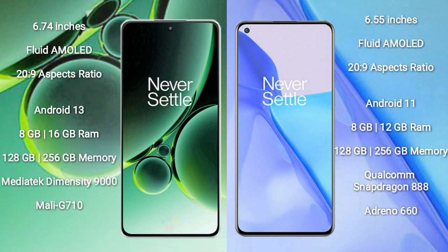The OnePlus Nord 3 runs on the Android 13 operating system, while the OnePlus 9 runs on Android 11.